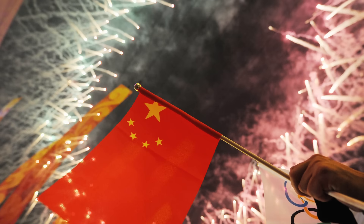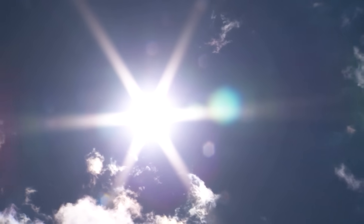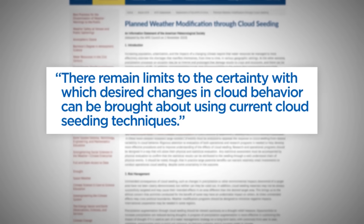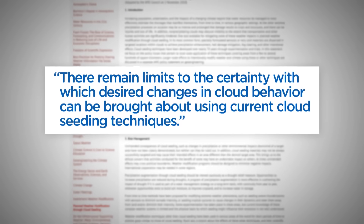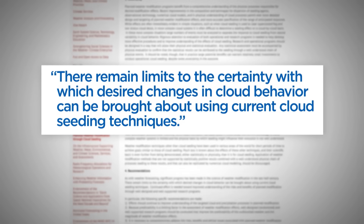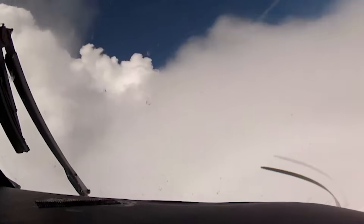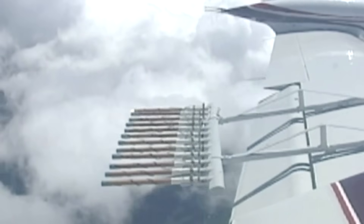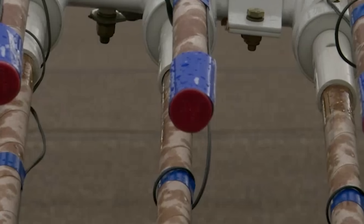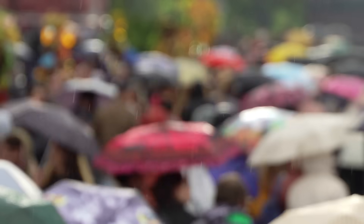But does it work? In 2008, Beijing claimed that they made it rain early with cloud seeding to ensure blue skies for the Olympic opening ceremony. In contrast, the American Meteorological Society released a statement in 2010 saying there's still uncertainty whether current cloud seeding techniques actually work to achieve the desired changes in precipitation. According to the World Meteorological Organization, 52 countries have a weather modification program, and many of them continue to boost funding for such operations — all in an effort to perhaps one day control the weather.